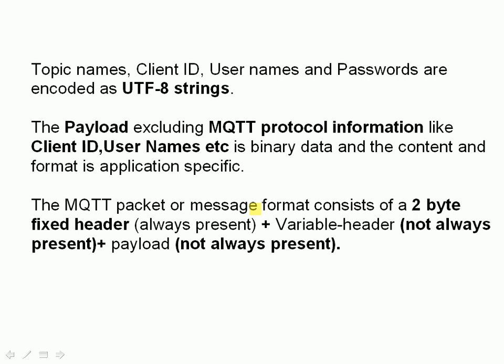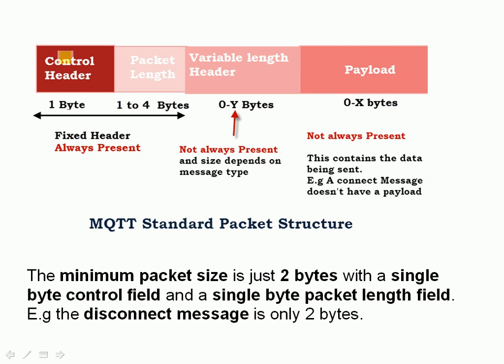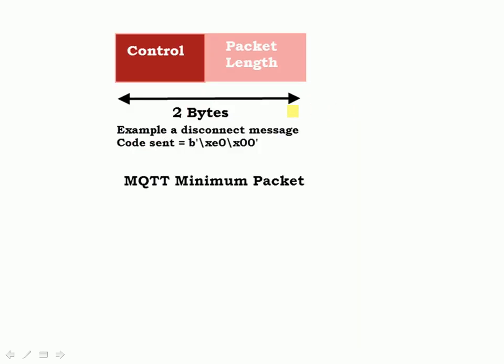Now the actual MQTT packet consists of a 2-byte fixed header which you always have, and that sets the minimum length of the MQTT packet at 2 bytes. There's a variable header that's not always present, and a payload which again is not always present. We can see in this diagram the fixed header is 2 bytes split into a control header and a packet length. Plus a variable length header which is not always present, plus a payload which is not always there. That sets our minimum packet size of 2 bytes. Here the encoding is hexadecimal E0 and the packet length is 00 because there's nothing after.